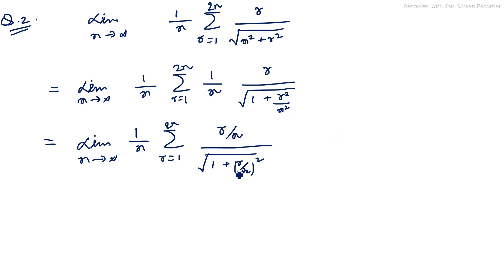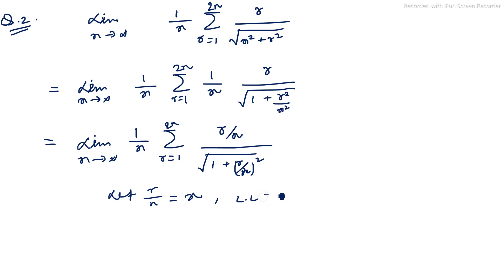Now let r/n equal x. The lower limit: since r = 1, φ(n)/n = 1/n → 0. The upper limit: ψ(n)/n = 2n/n = 2. So the upper limit is 2.